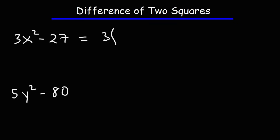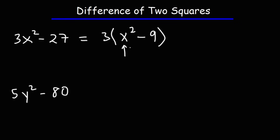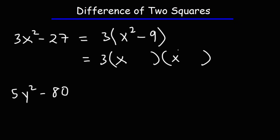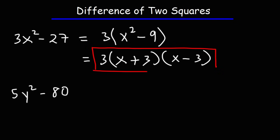So let's take out the GCF first. 3x squared divided by 3 is x squared, and 27 divided by 3 is 9. Now we have a difference of two perfect squares — we can take the square root of x squared and 9. The square root of x squared is x, and the square root of 9 is 3. So this is going to be plus and minus. Thus our answer is 3 times x plus 3 times x minus 3.